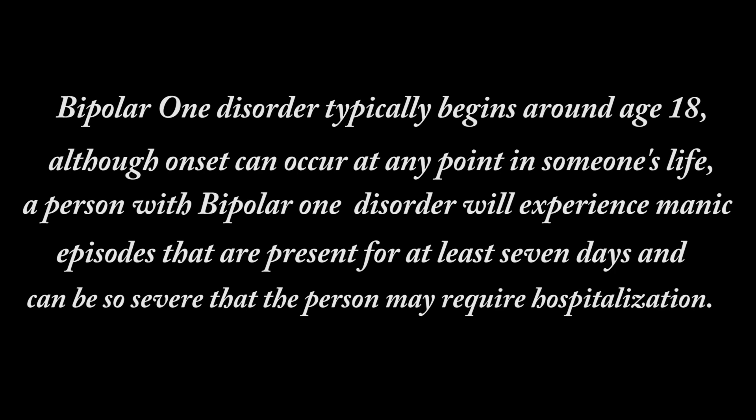The difference between each type of bipolar disorder comes down to when they begin and how severe the manic and depressive symptoms are. Bipolar 1 disorder typically begins around age 18, although onset can occur at any point in someone's life. A person with bipolar 1 disorder will experience manic episodes present for at least seven days, which can be so severe that hospitalization may be required. They may also experience major depressive episodes, although some people with bipolar 1 may only experience mania without any depression.